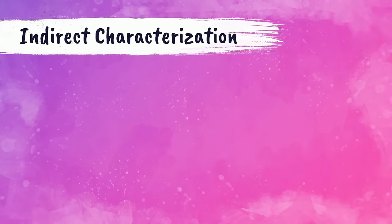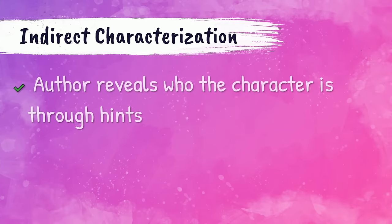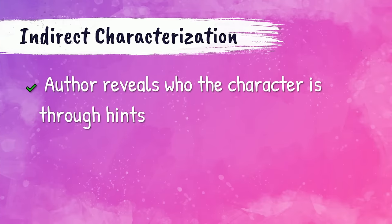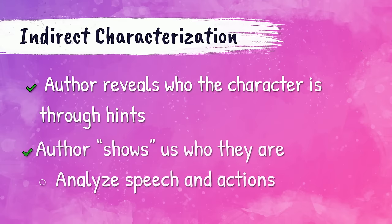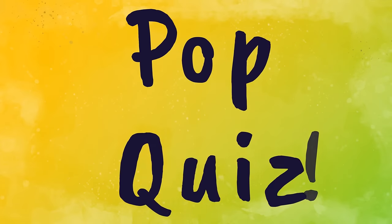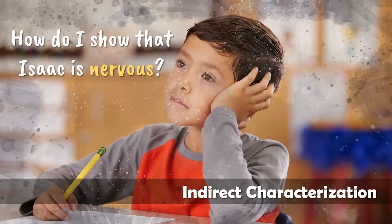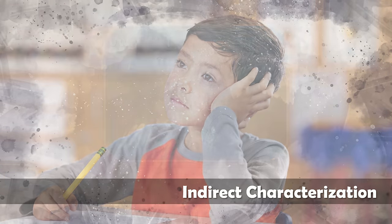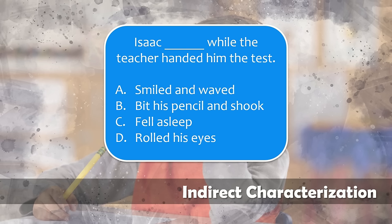Indirect characterization is where the author reveals who the character is through hints. How does the author show us who they are? We have to analyze their speech and their actions. Let's do a pop quiz and see if you can show instead of tell. Going back to Isaac — how do I show that he's nervous? Let's do multiple choice. On a piece of paper or in your head, answer this question.